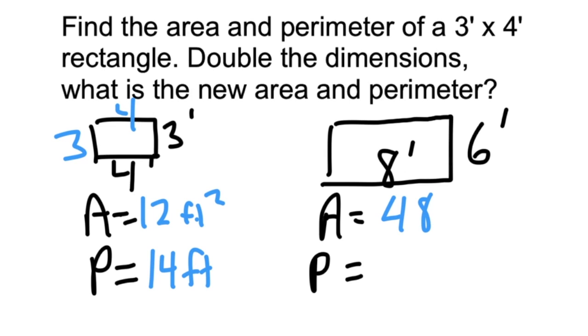Six times eight is 48 feet squared. The perimeter when we add all the sides is now 28 feet. We doubled the dimensions.